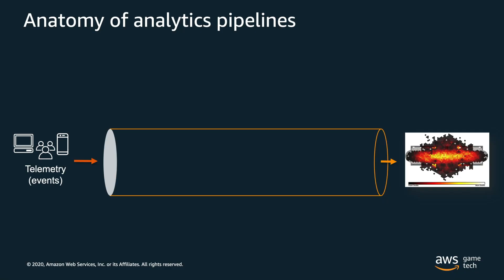There are typically four different stages of an analytics pipeline. The first phase is the ingest phase, or the collect phase. This is how you gather all of your data from your data producers, which could be your players, the game itself — whether it's PC, mobile, console — or even the game back end.